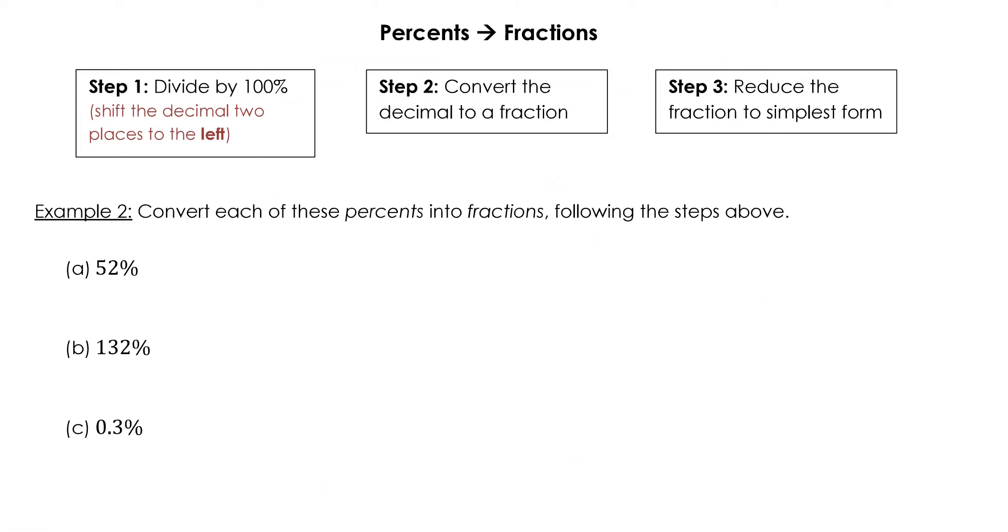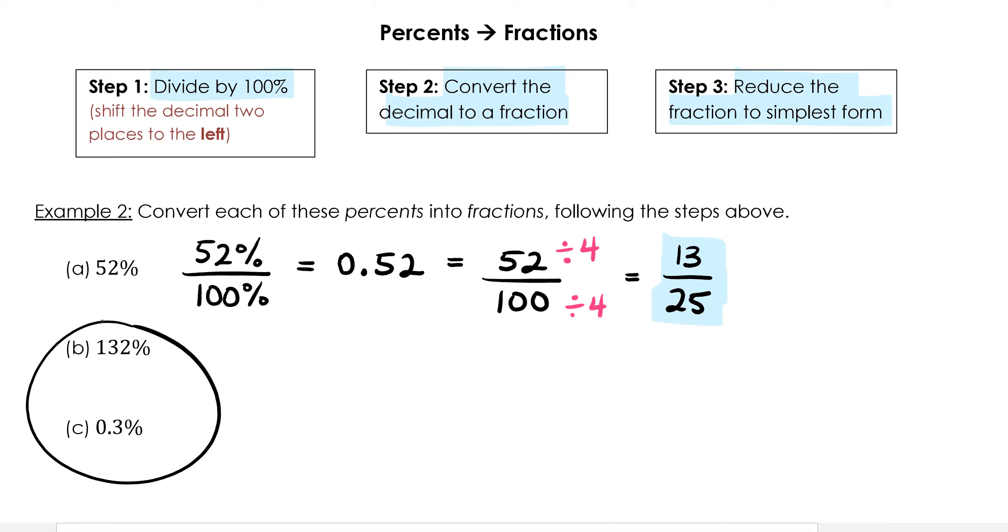To convert percents to fractions, we divide by 100%, or shift the decimal place two places to the left. Then we convert our decimal to a fraction and reduce the fraction to simplest form. Let's do one together. Step one is dividing by 100%, so we'll do 52% divided by 100% equals 0.52. Now we need to convert this to a fraction. This can be expressed as 52 hundredths. To simplify, you'll notice that both numerator and denominator are divisible by 4. 52 divided by 4 is 13. 100 divided by 4 is 25. So here's our answer in simplest form.